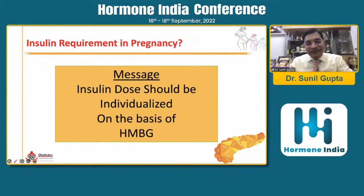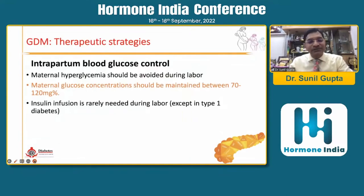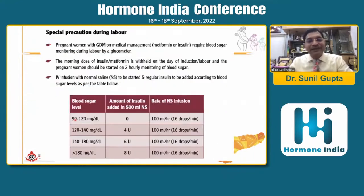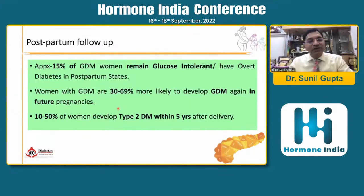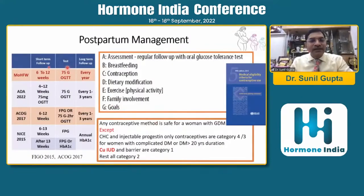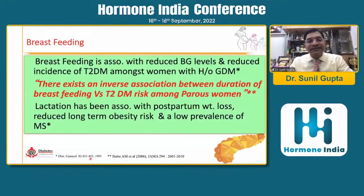The insulin dose has to be individualized. Intrapartum, you should try to achieve blood sugar between 70 to 120 to avoid neonatal hypoglycemia. Some individuals may require insulin infusion if on higher doses. For postpartum follow-up: 15% of GDM women may remain glucose intolerant while the rest become normal. Women with GDM are 30 to 70% more likely to develop diabetes in the next pregnancy, and almost 50% develop type 2 diabetes within 5 years after delivery. The Government of India recommends follow-up at 6 weeks, 6 months, and then every year.